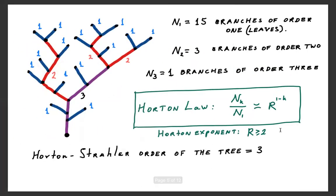All the segments of the tree that were removed after one Horton pruning are color-coded blue here. They're leaves, that is the branches of order one. There are 15 of them, so N_1 equals 15.